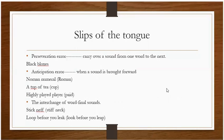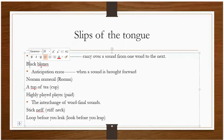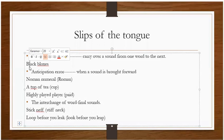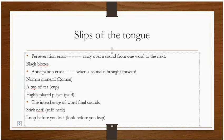Another type of slip of the tongue is a preservation error, where a sound is carried over from one word to the next. For example, 'black blocks' becomes 'black blox' — the 'l' sound from 'black' is preserved and carried into 'boxes.'